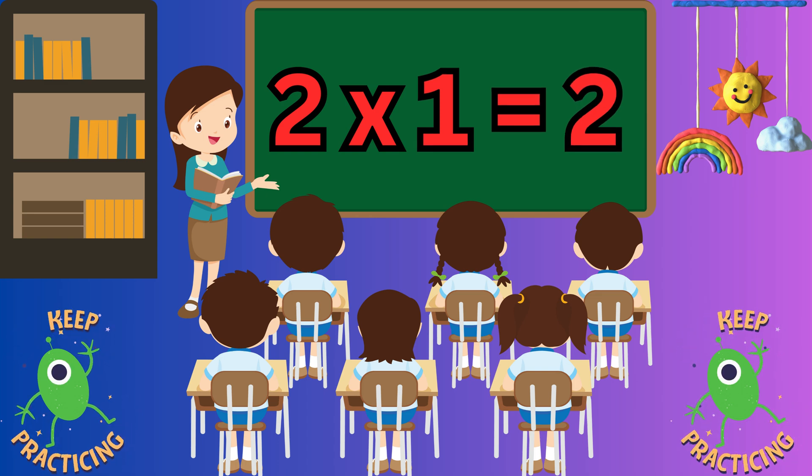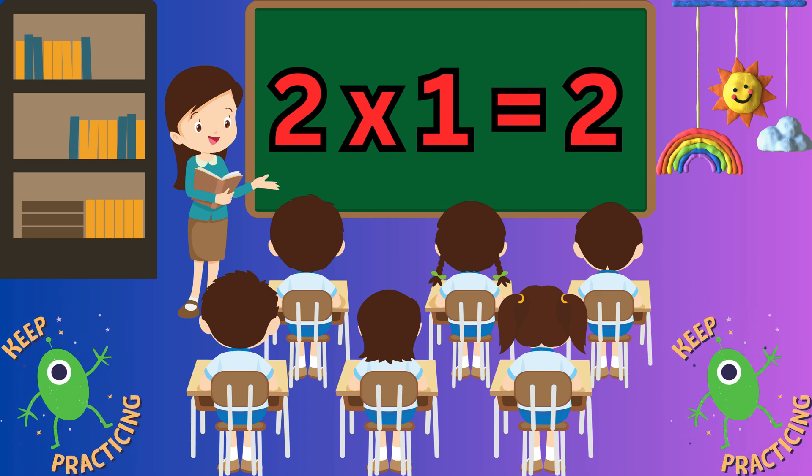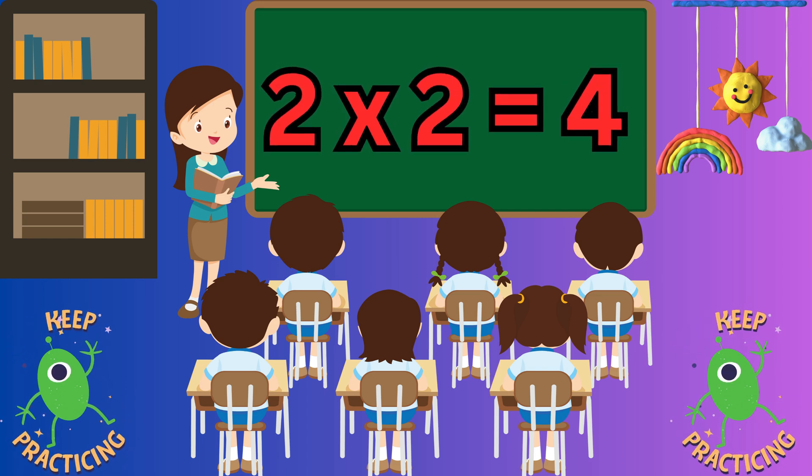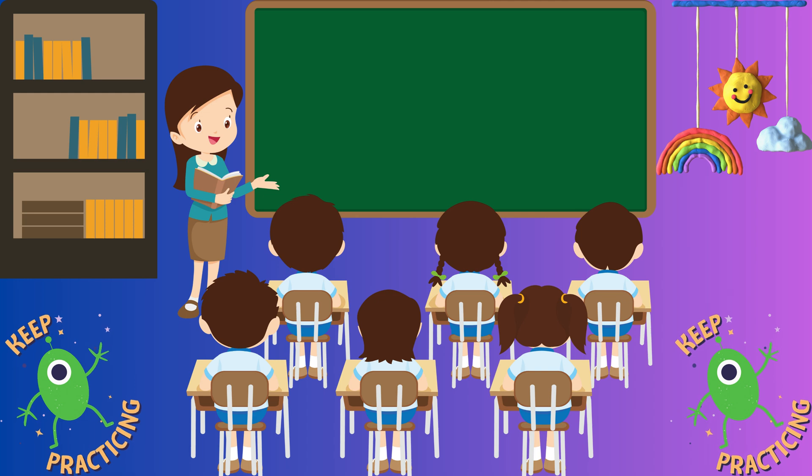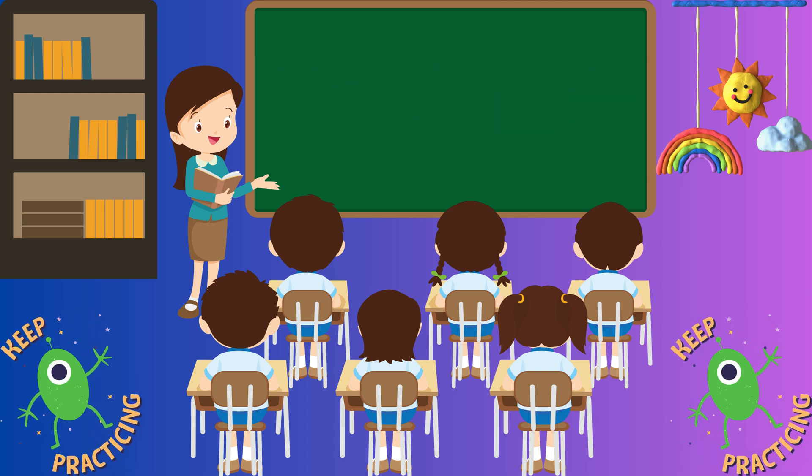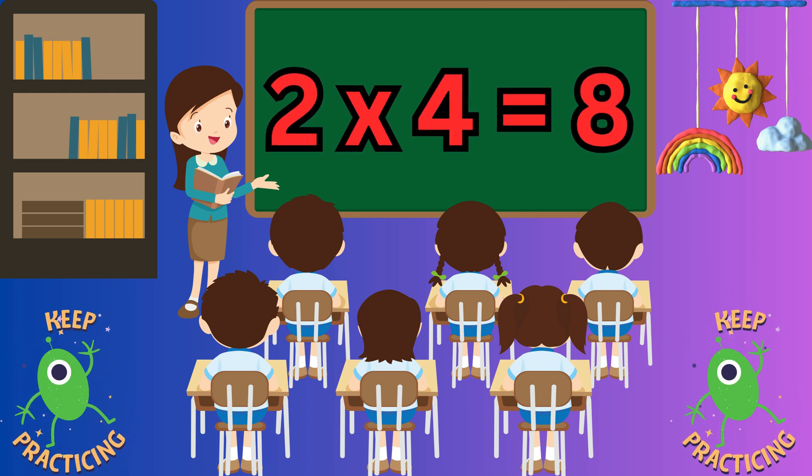Two ones are two. Two ones are two. Two twos are four. Two twos are four. Two threes are six. Two threes are six. Two fours are eight.